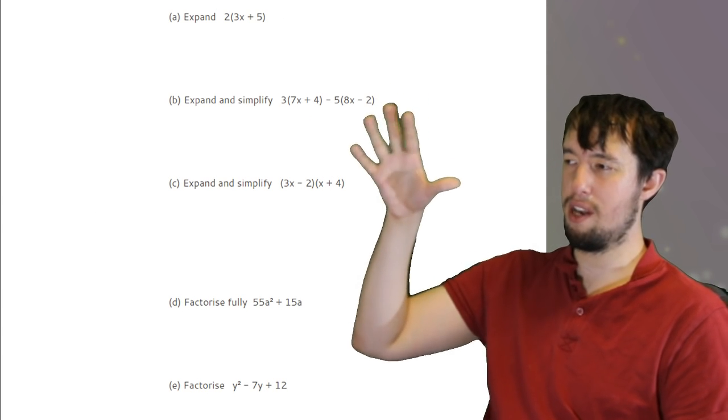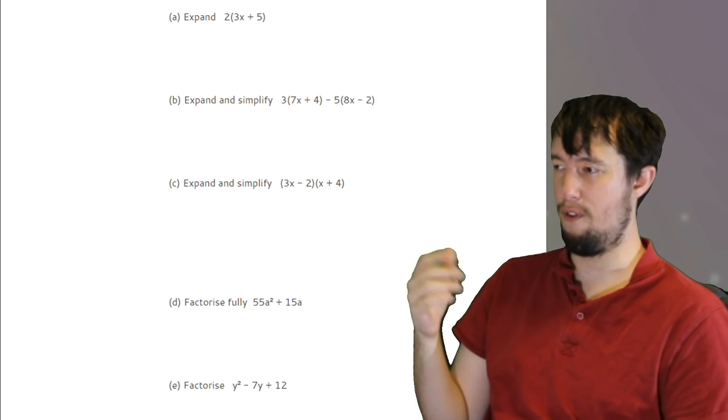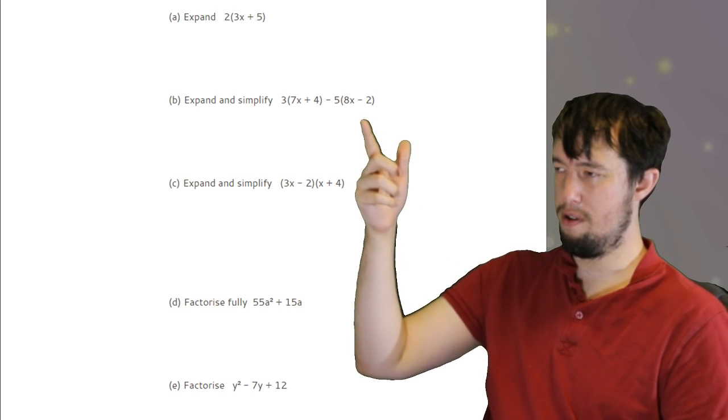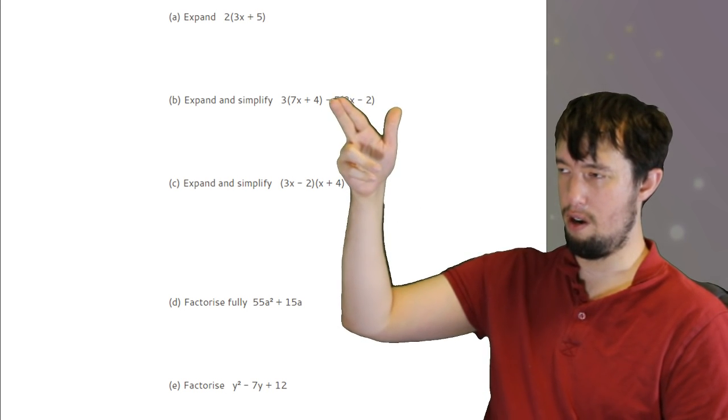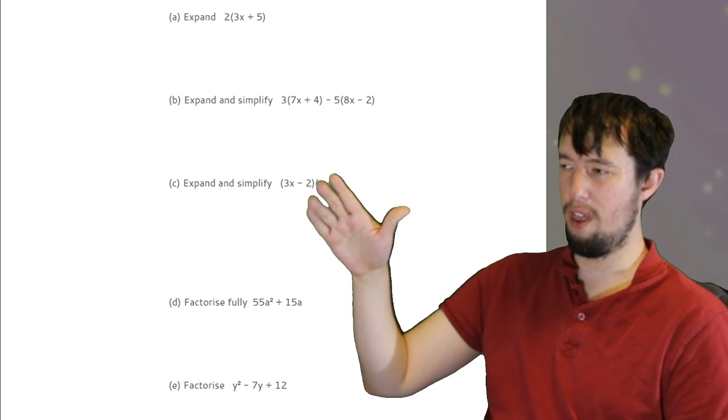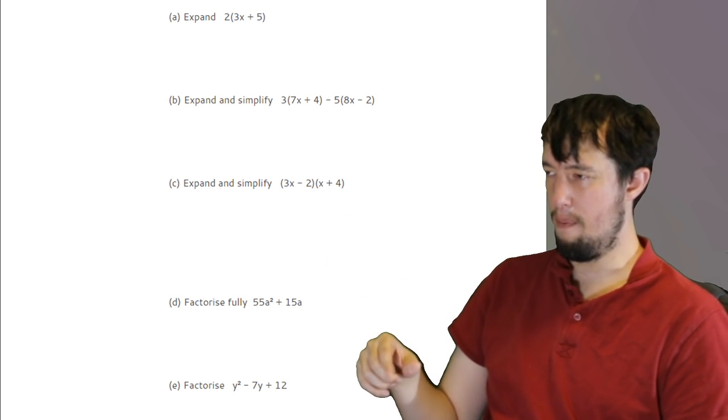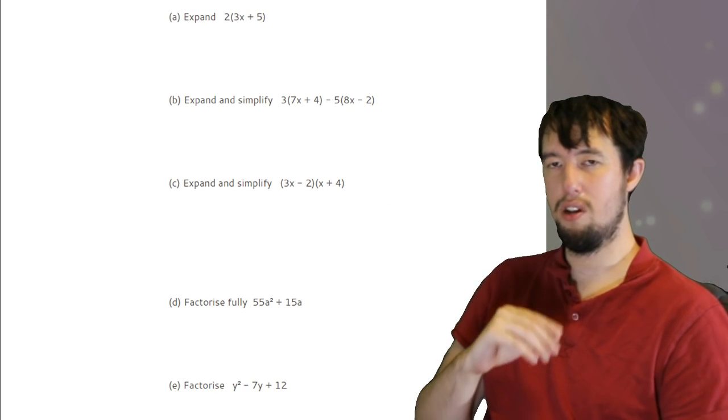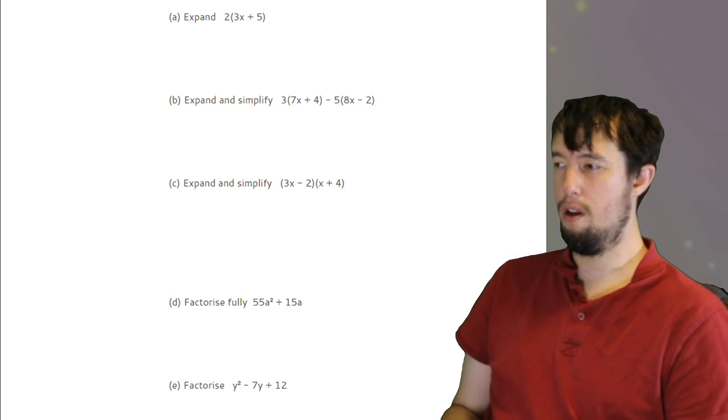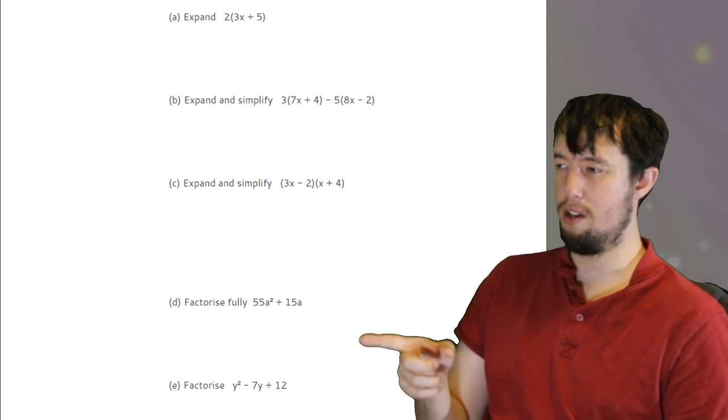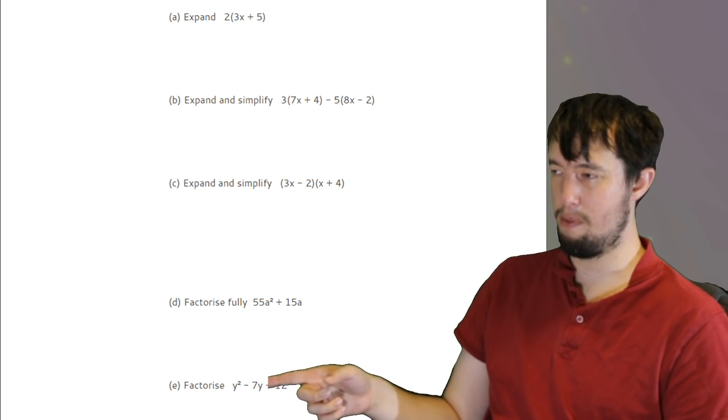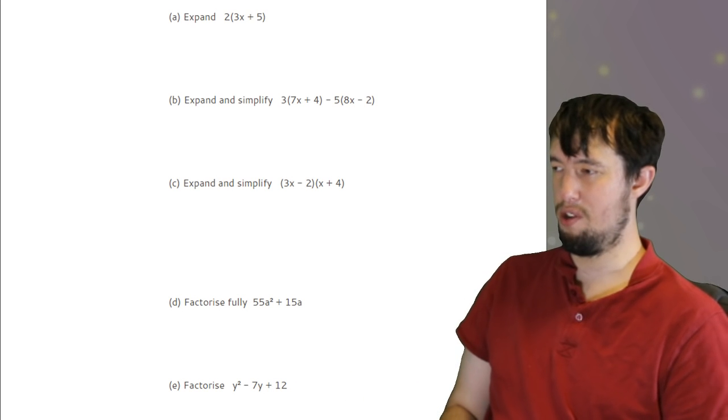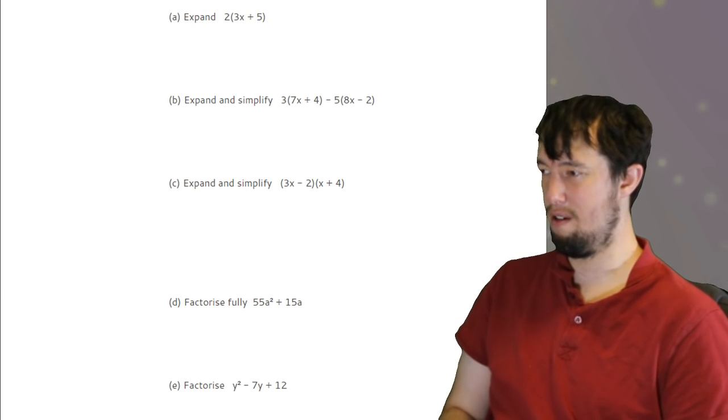Make sure you understand how to expand and factorize as well. That didn't really appear on paper one. This one did. So ignore question b. But foil for that, or whatever method works for you. And then factorize, just put down a set of brackets and try and get the numbers on the outside. Look for numbers, look for letters, sometimes it's both. And for the factorize at the bottom, you're looking at two numbers that add together to make the minus seven and times together to make the twelve, which is minus four and minus three.